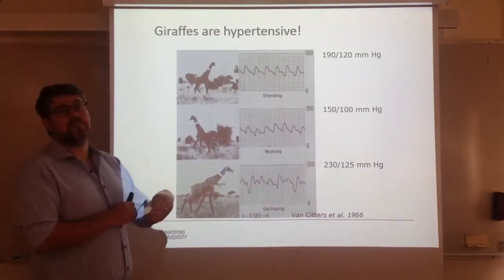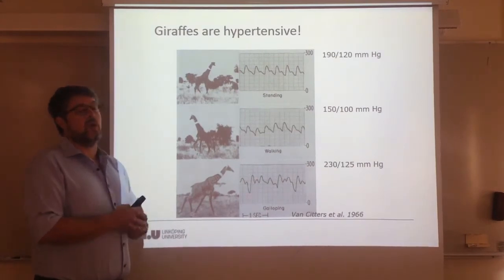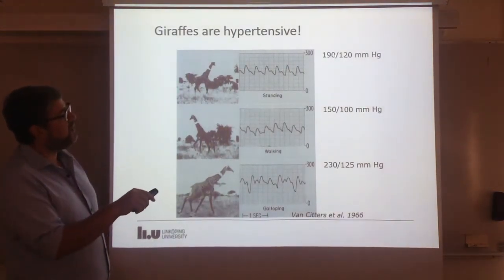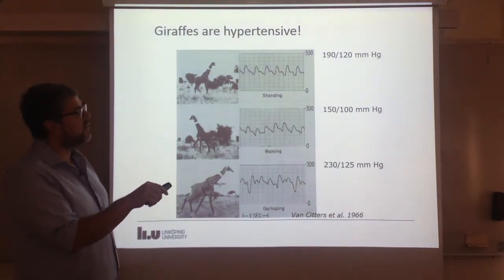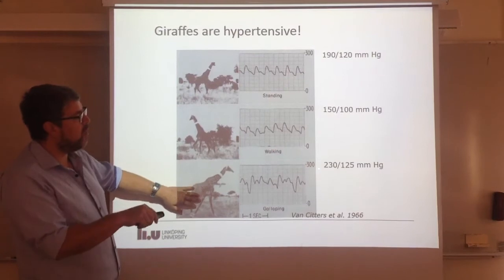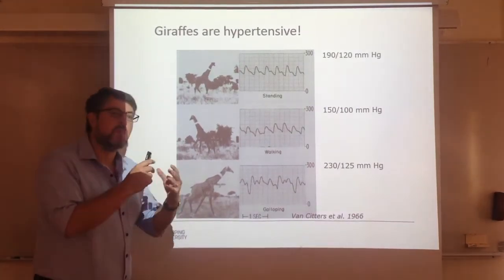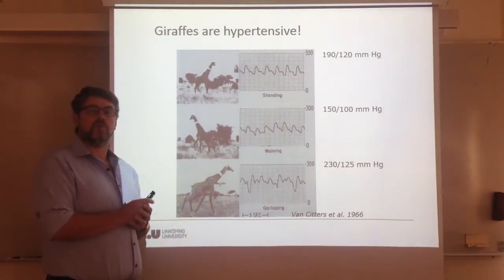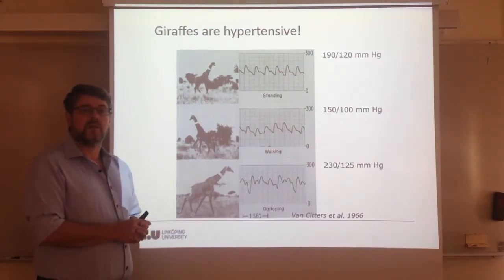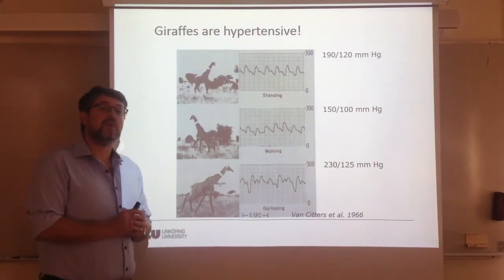In a later study from 1966, measurements were done in living giraffes just running around. Pressures in the range of 192 mmHg systolic were recorded when the animals were standing, walking, or galloping — you can see how blood pressures increase, or in the case of walking they decrease slightly. The combined effect is that giraffes have a blood pressure that would be lethal for a human being. That raises the question: how can giraffes cope with a pressure that would kill a man? Why are giraffes hypertensive?